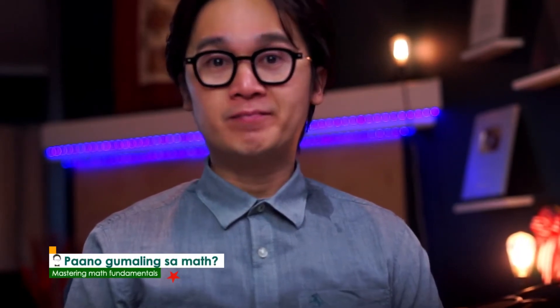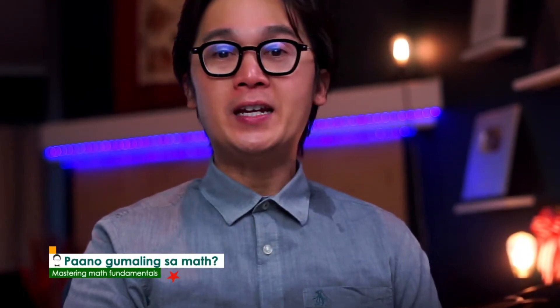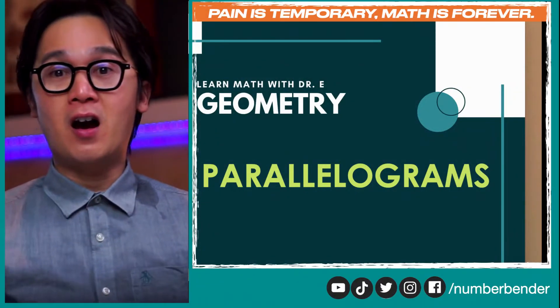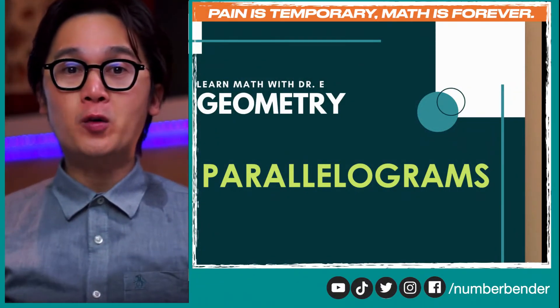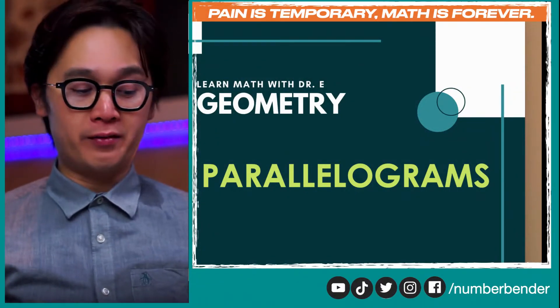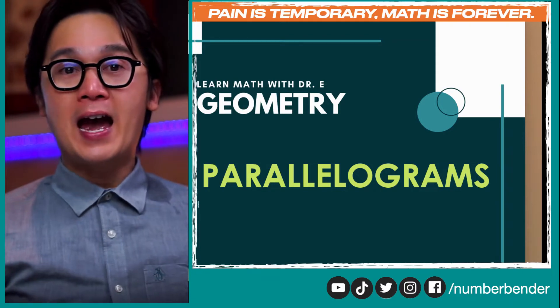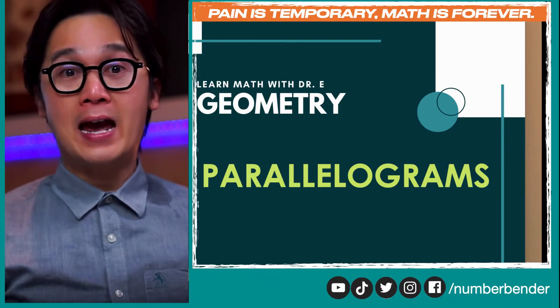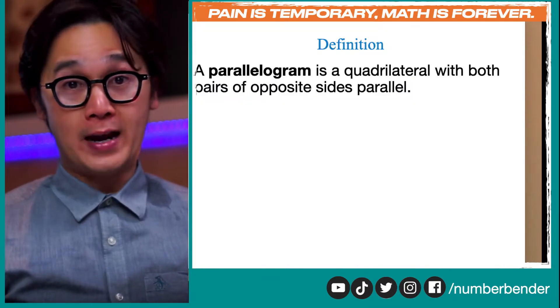We have different types of quadrilaterals and one of them is a parallelogram. We also have special quadrilaterals like rhombus, square, rectangle, and trapezoid, but for today we're going to be more specific on parallelograms and we're going to be working on the conditions that will make a quadrilateral a parallelogram.